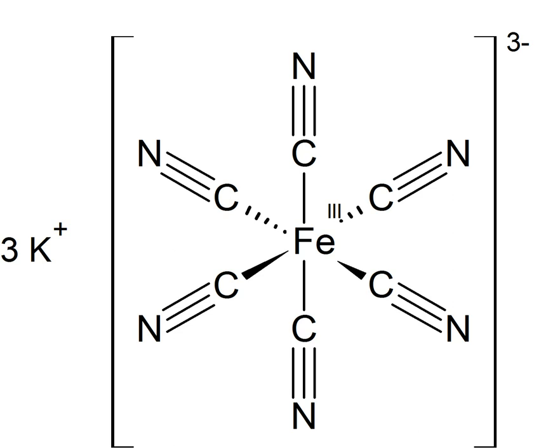Potassium ferricyanide is the chemical compound with the formula K3[Fe(CN)6]. This bright red salt contains the octahedrally coordinated ferricyanide ion. It is soluble in water and its solution shows some green-yellow fluorescence.